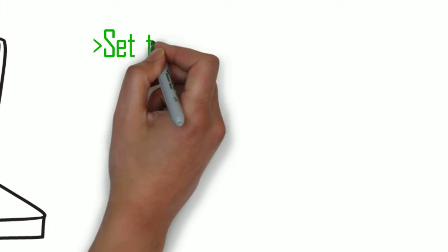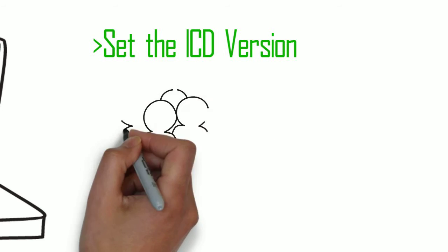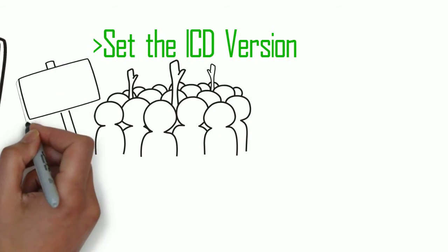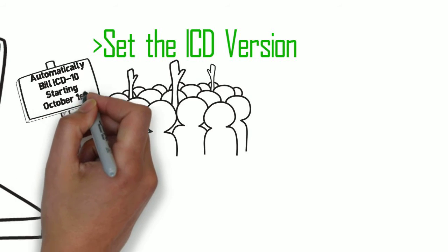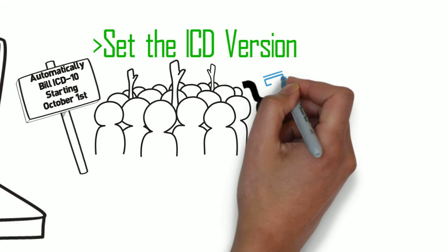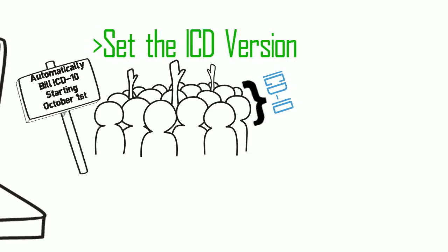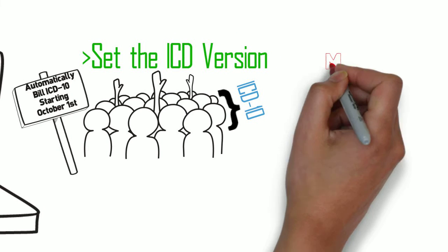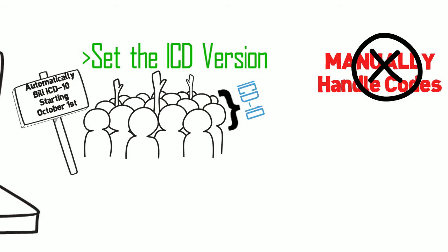Third, set the ICD version. At the insurance level, users indicate which carriers are switching to ICD-10 and set the effective date of October 1st. If everything is set up properly, it doesn't really matter whether the insurance requires ICD-9 or ICD-10. Users can code an ICD-10 for everyone and the system will put the appropriate code on the claim, alleviating the hassle of having to manually manage it.